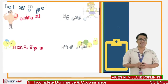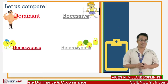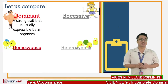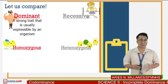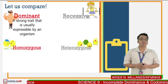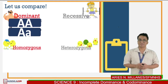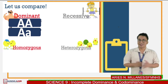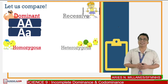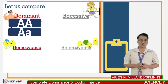To understand genetics further, let us define the following terms. First is dominant traits — usually called the strong traits that are expressible by an organism. In genetics, we write it with a capital letter. Notice the way it is written? It is the way to signify and give emphasis that the trait is dominant over other traits.